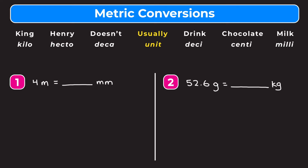King stands for kilo, Henry stands for hecto, doesn't stands for deca, usually stands for unit — which is highlighted in yellow because the unit can be grams, liters, or meters. Drink stands for deci, chocolate stands for centi, and milk stands for milli.